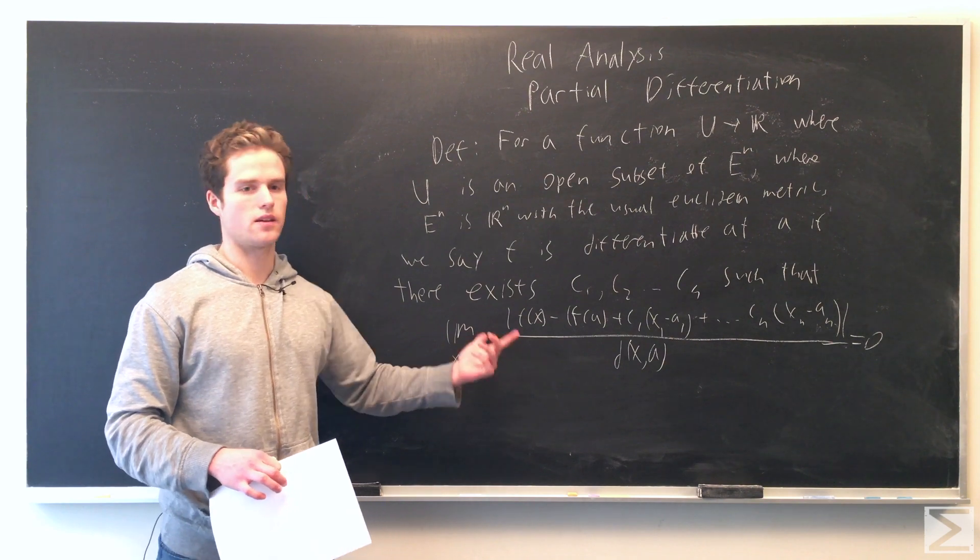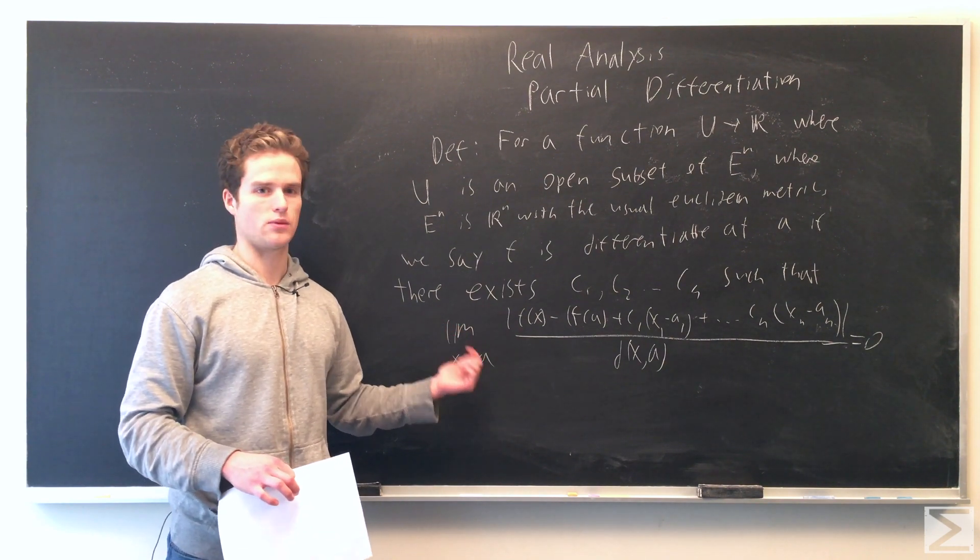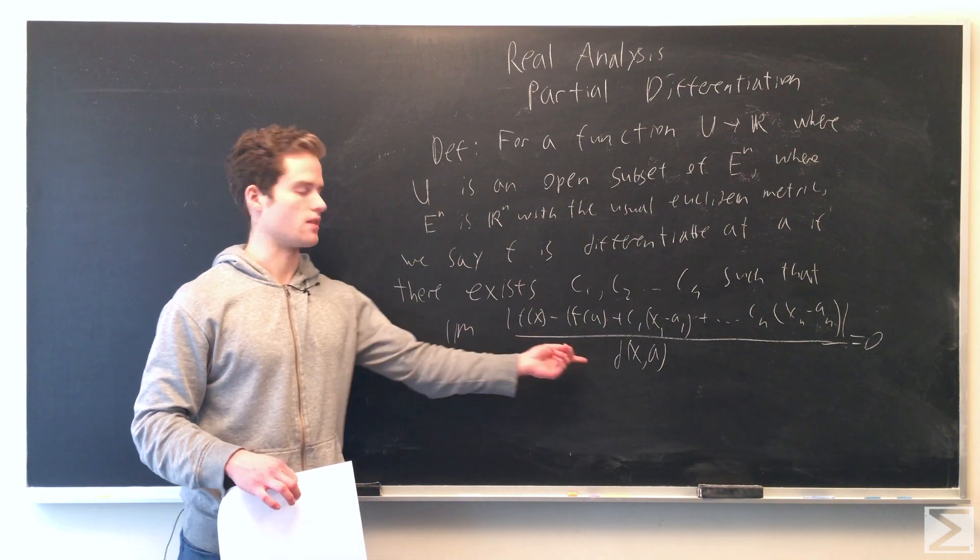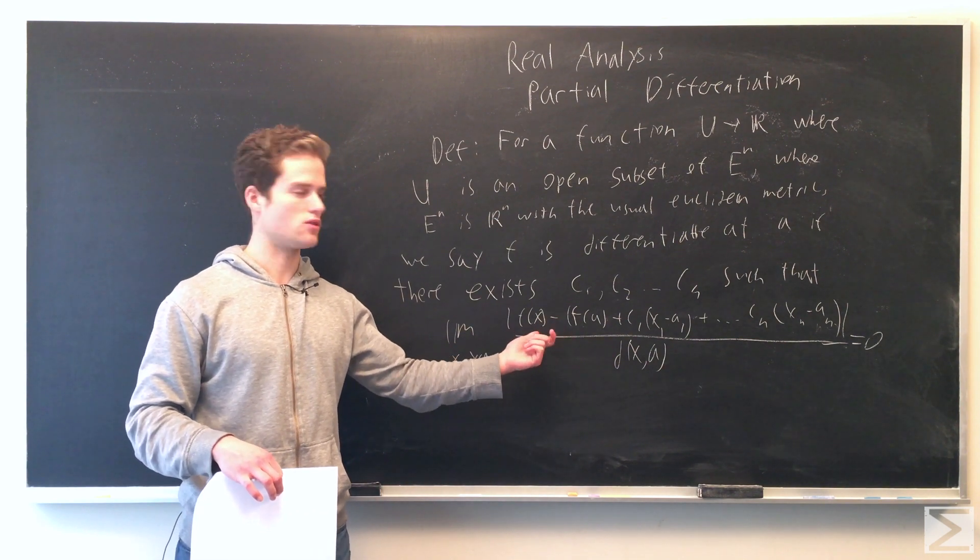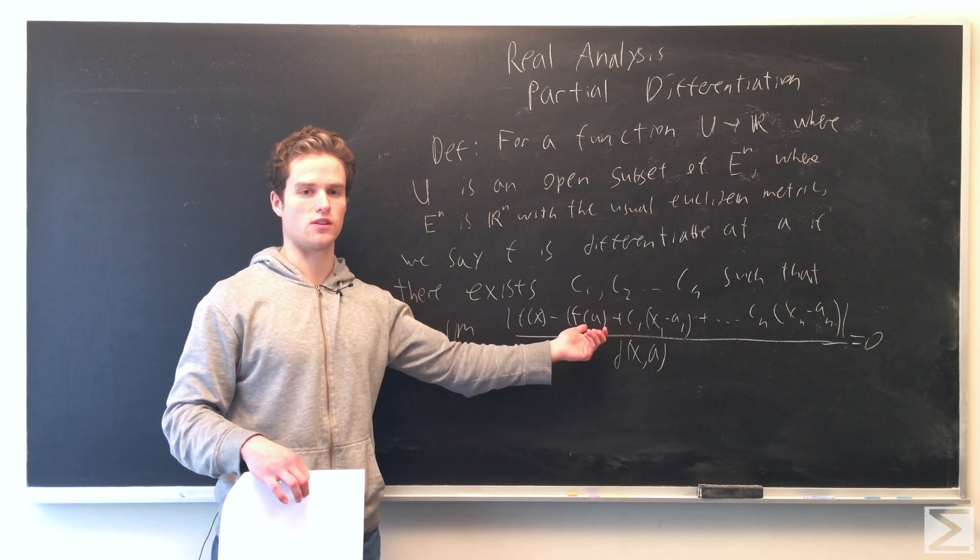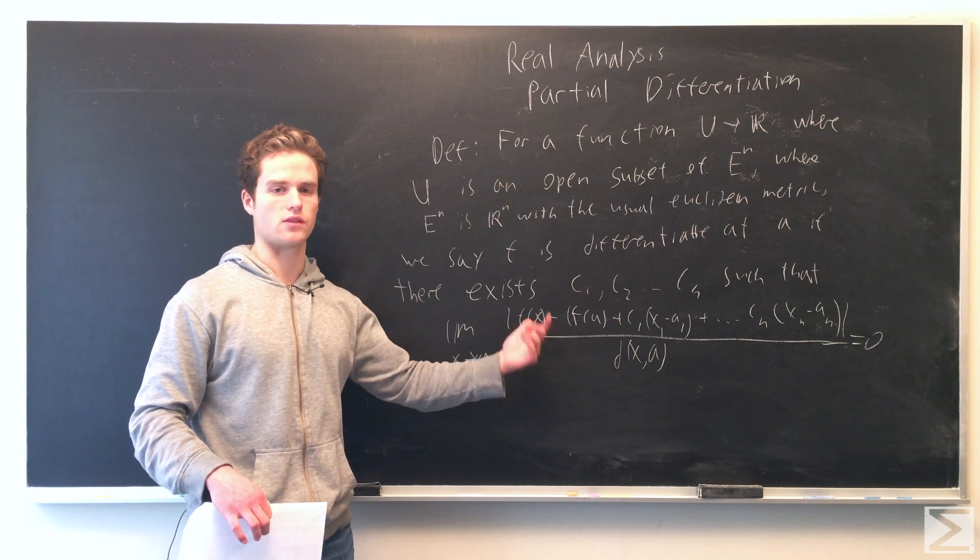Note, if we let x approach a where x has all the same coordinates as a except for one coordinate, the distance between x and a is just the absolute value of that coordinate difference. Then c_i is really just the partial derivative of f in that direction.